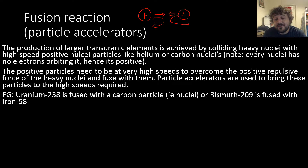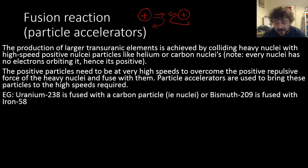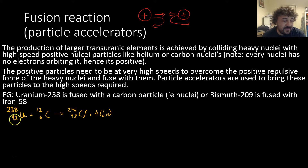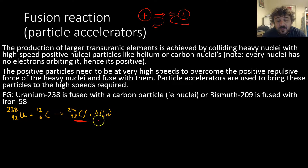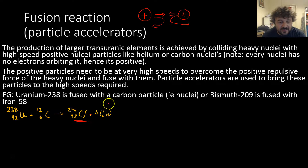For example, uranium-238 fused with a carbon nucleus: down here we have uranium-238 being smashed with carbon, and this gives us californium-246 plus four neutrons.